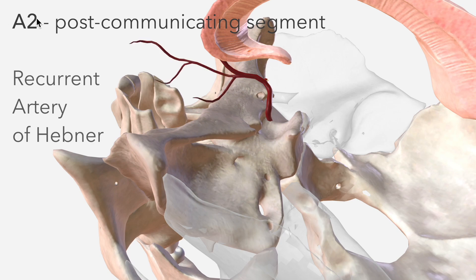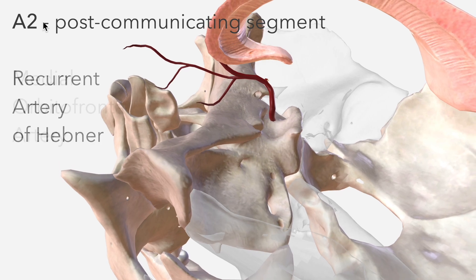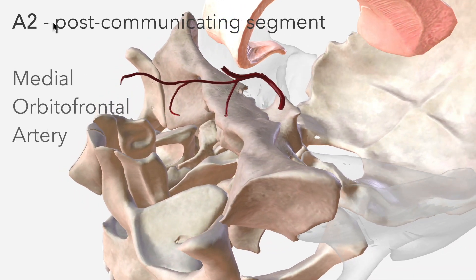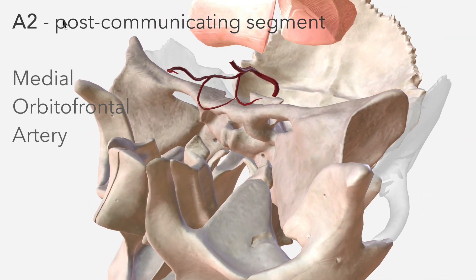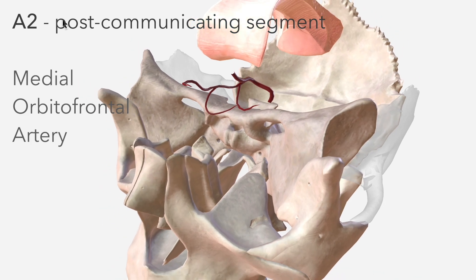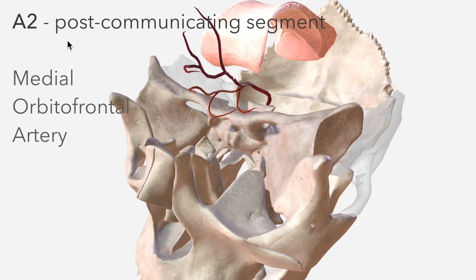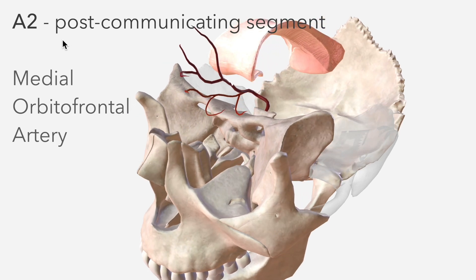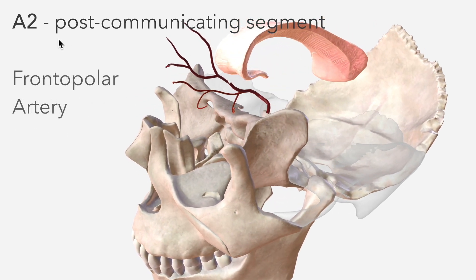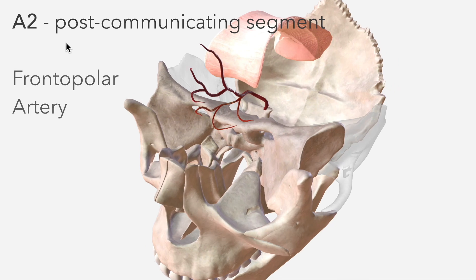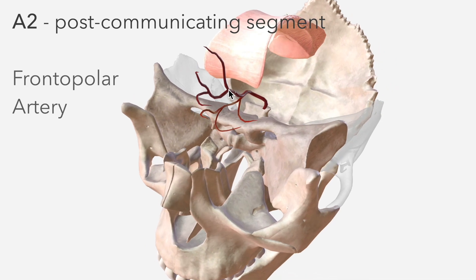Also departing from A2 is the medial orbitofrontal artery, which supplies the orbital gyrus and the inferomedial frontal lobe in the anterior cranial fossa. The third branch from A2 is the frontopolar artery, which intuitively supplies the frontal pole of the cerebral cortex, particularly its medial aspect.